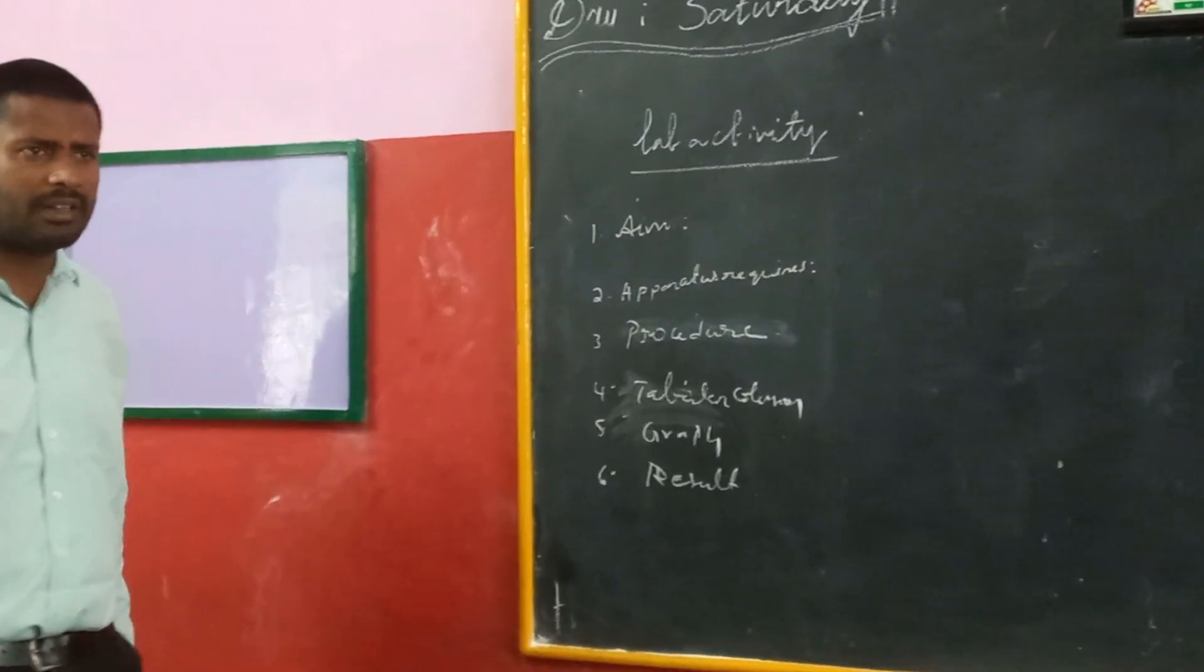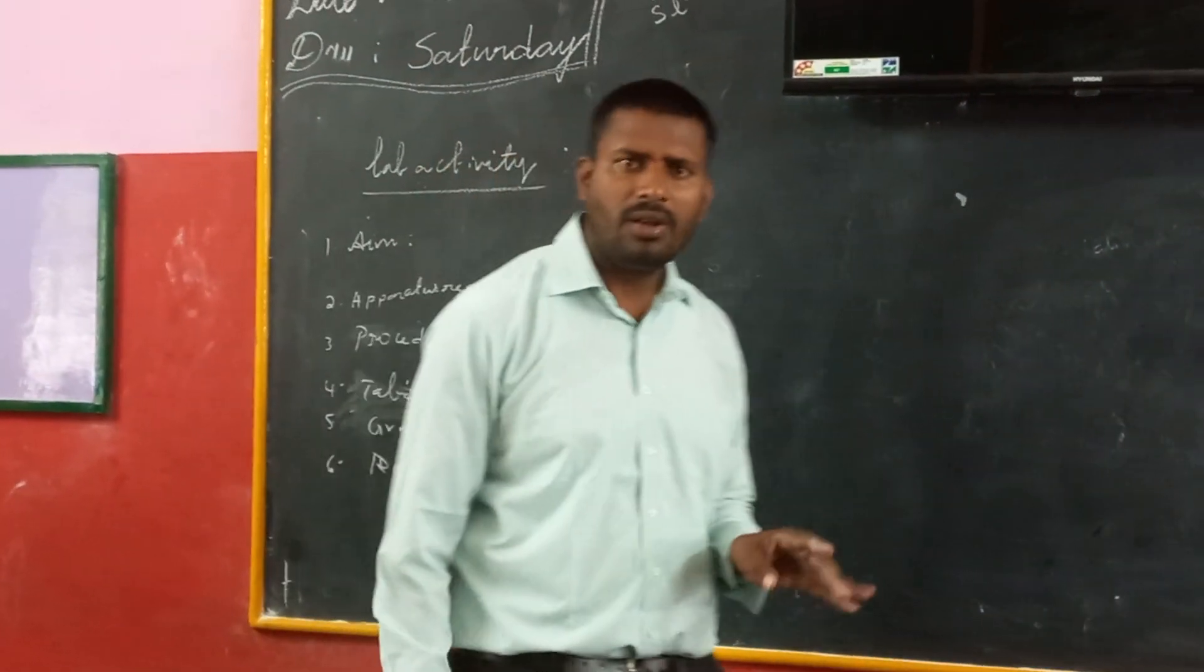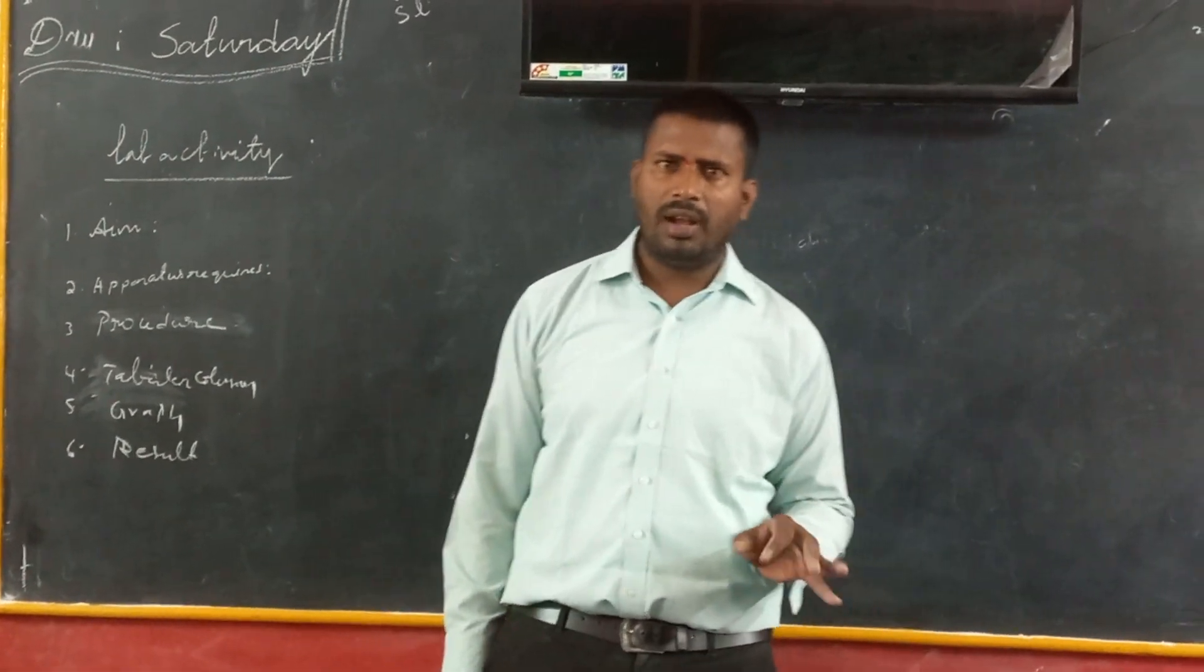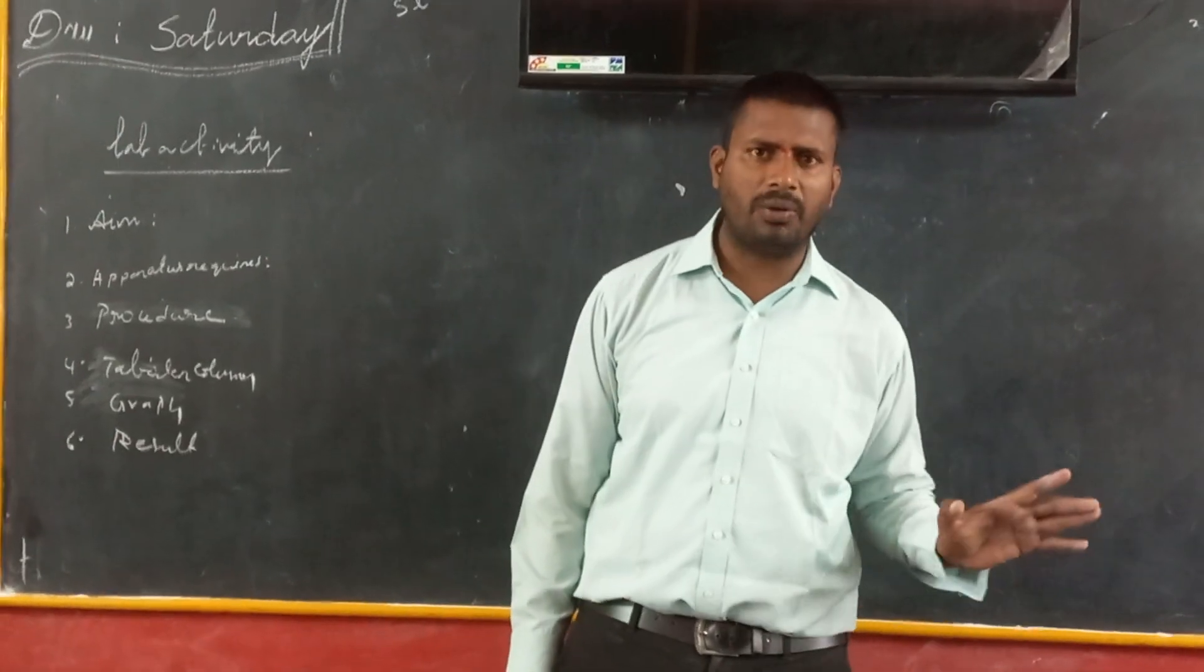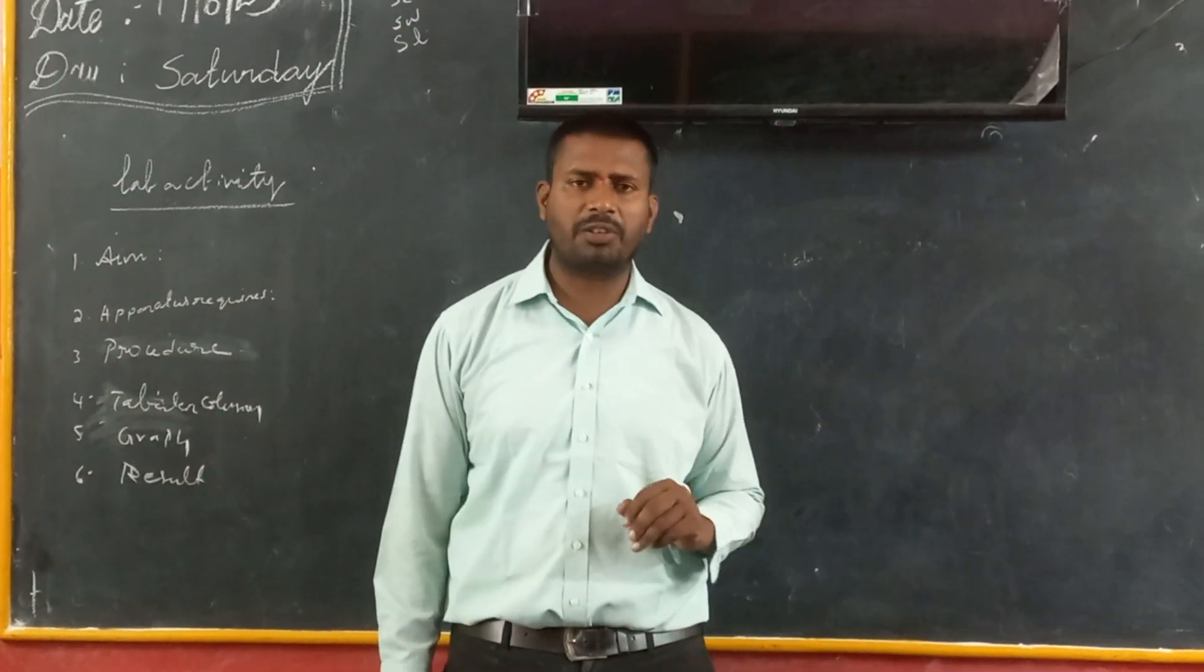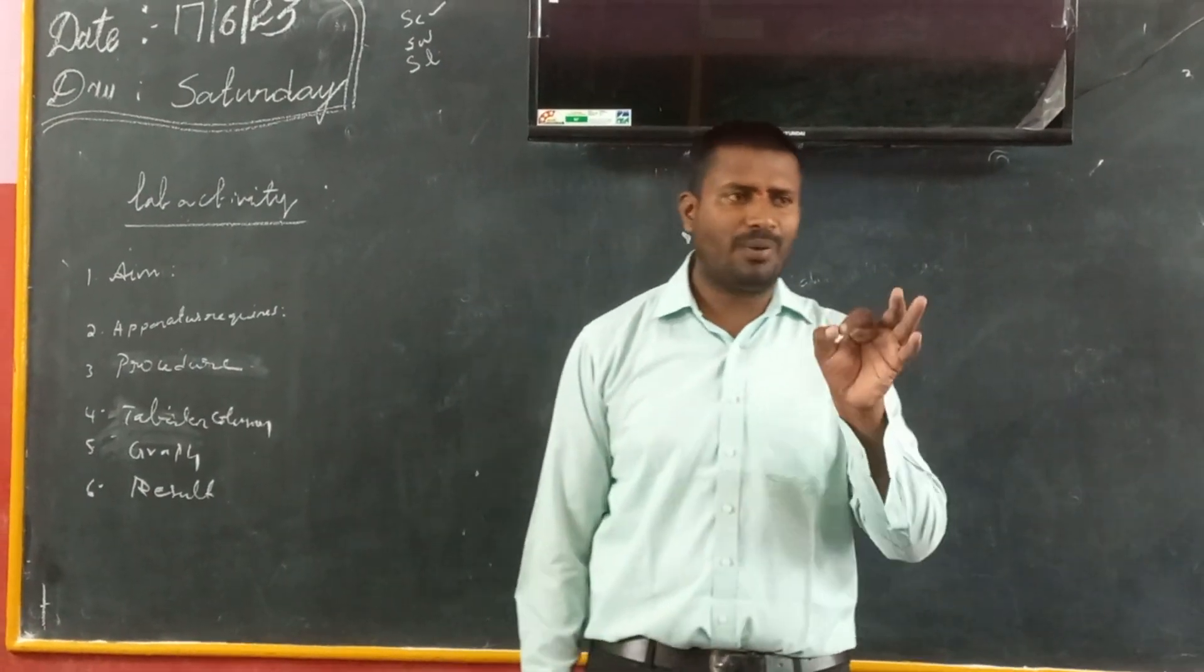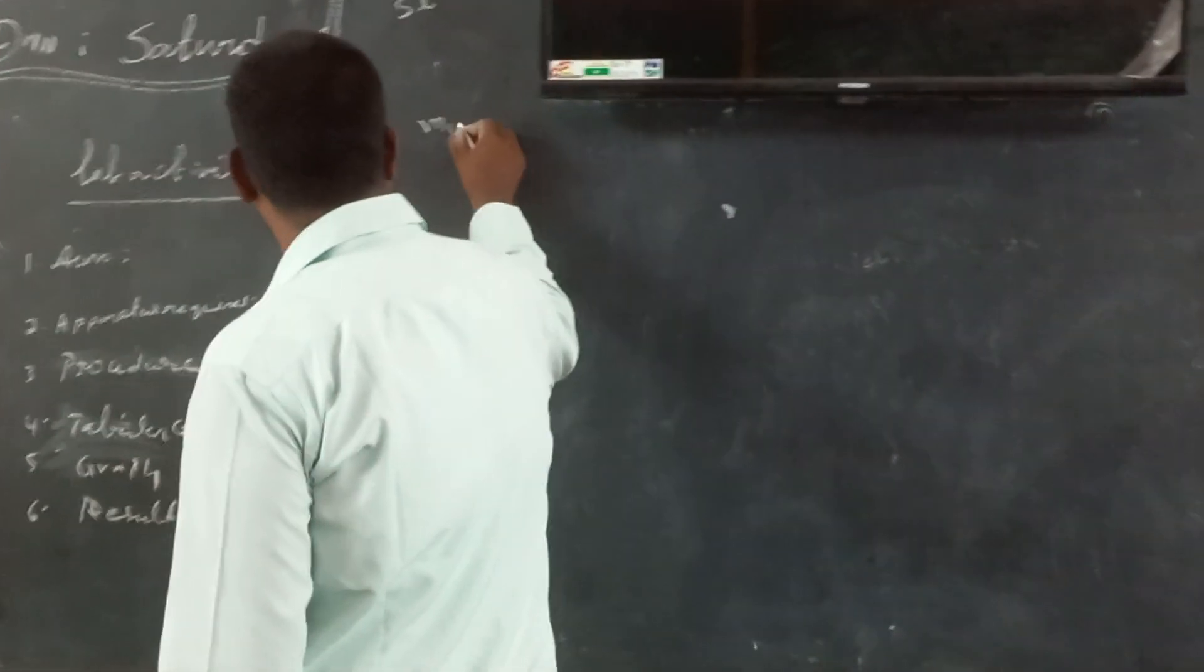Apparatus: what are the apparatus required? We require one calorimeter, we require one stirrer, we require water, we require lead shots. These are the apparatus which are required. Procedure: on the day of experiment, try to take a calorimeter along with a stirrer, find out the mass of calorimeter. The mass of calorimeter is M1.